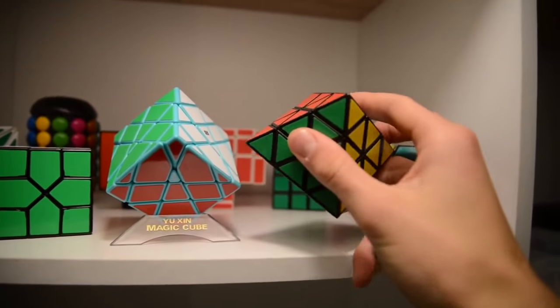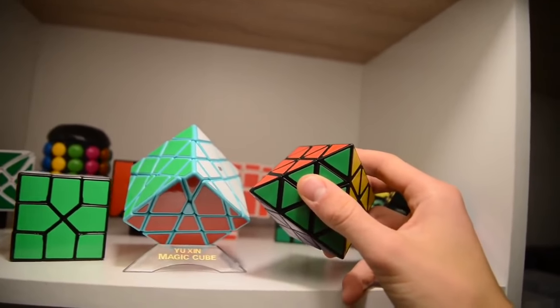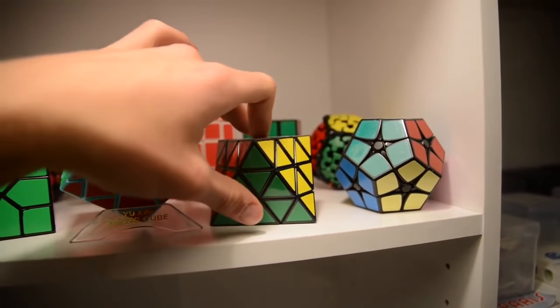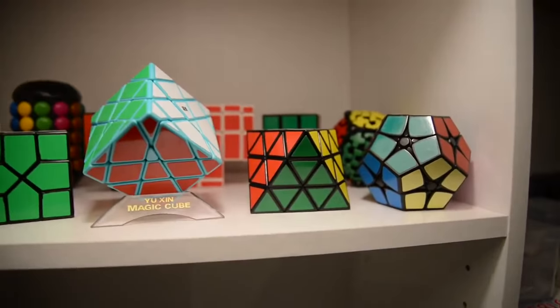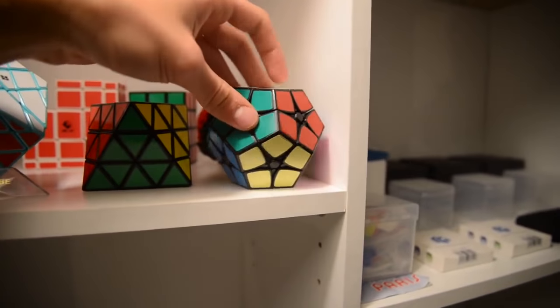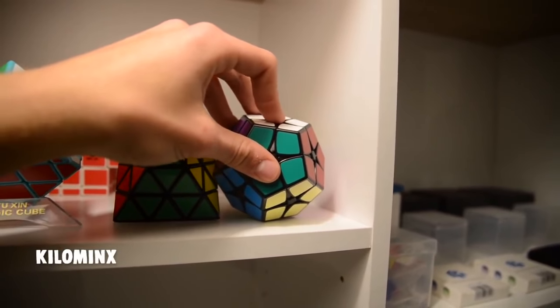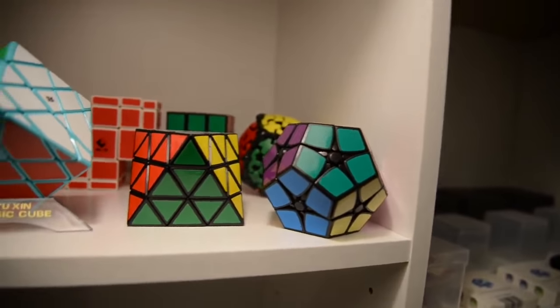Next up, the octahedron cube. I had never solved it until a few hours ago for this video and this is really fun. Next up, the 2x2 megaminx or the mini megaminx. It's a cool puzzle and it's a really fast one as well.